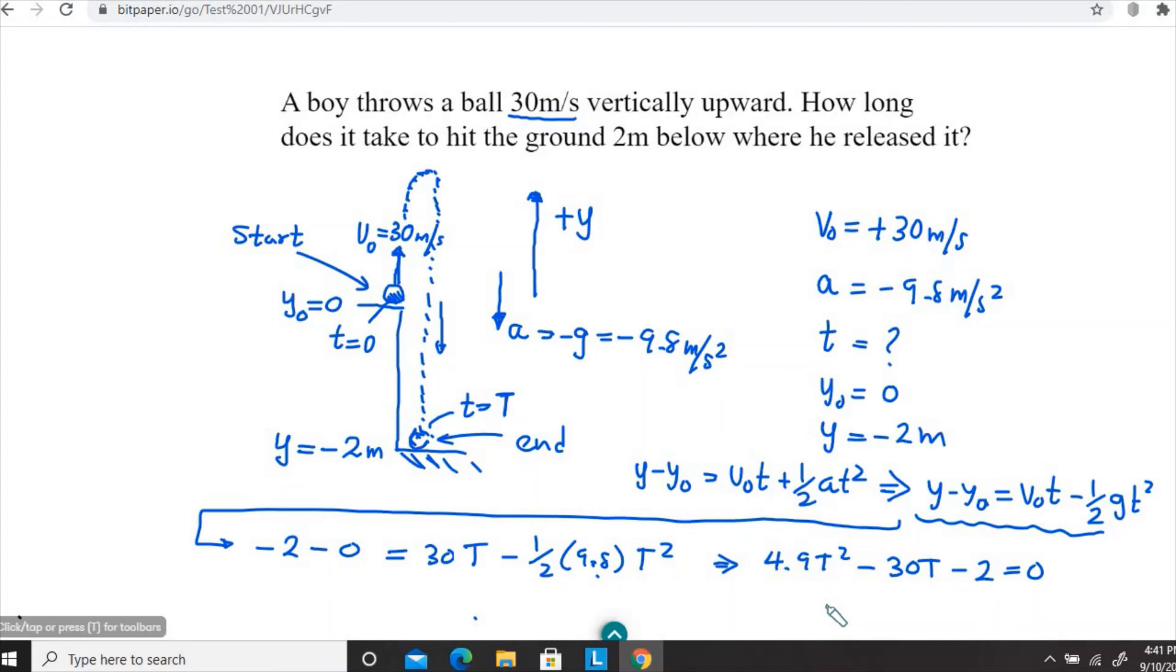Is y minus y naught equals v naught t plus one half a t squared. We already talked about this same equation where we substituted the value for the gravitational acceleration.